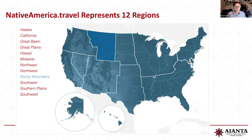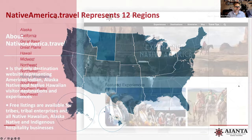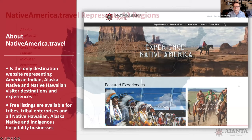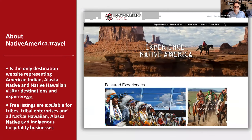NativeAmerica.travel represents 12 different regions, and this is the map that is on the website. You can see how it's all broken down. When you click on any one of these particular locations, it shows the location on the map and you can click on that and it takes you to all the tribes that are located within there. This is a really good tool to use, especially in international travel.